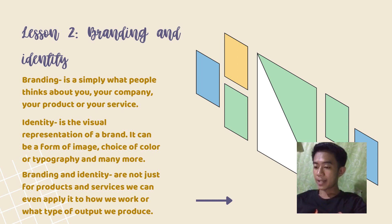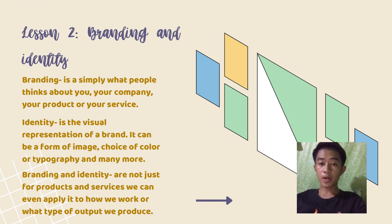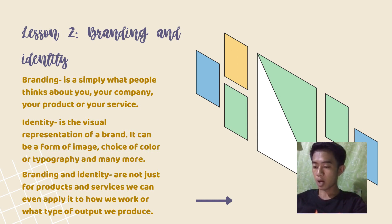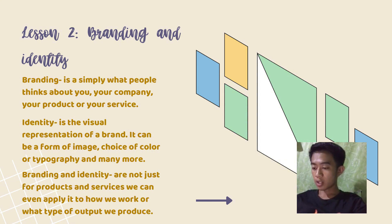Identity is the visual representation of a brand. It can be a form of image, choice of color, or typography, and many more. We quickly recognize a company and its service just by looking at its logo, typeface, or color combination. Branding and identity are not just for products and services — we can even apply it to how we work or what type of output we produce. For example, the use of bright colors and bold colors are often associated with a famous painter.